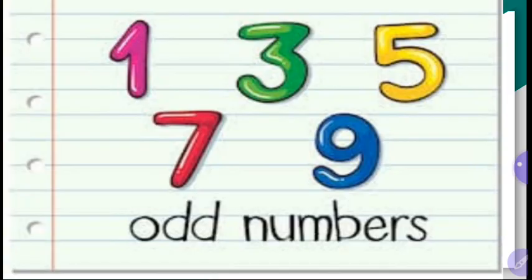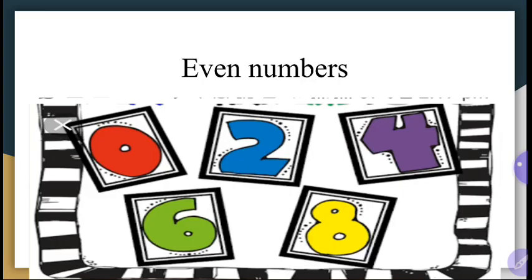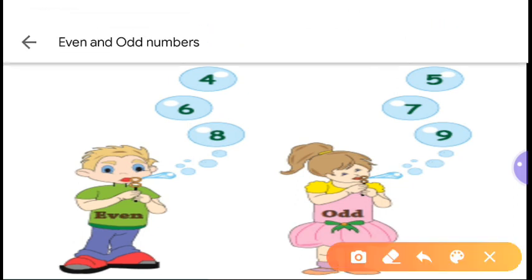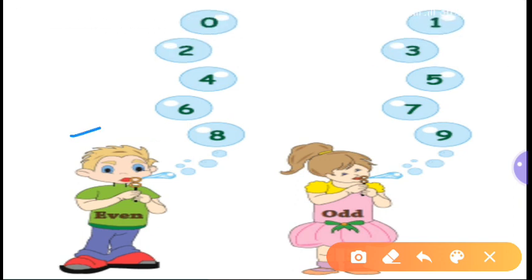So to recap: 1, 3, 5, 7, 9 — all these numbers are odd numbers. And 0, 2, 4, 6, 8 — these all numbers are even numbers. Now tell me, which ones are odd numbers and which ones are even numbers? These are even numbers, and these are odd numbers.